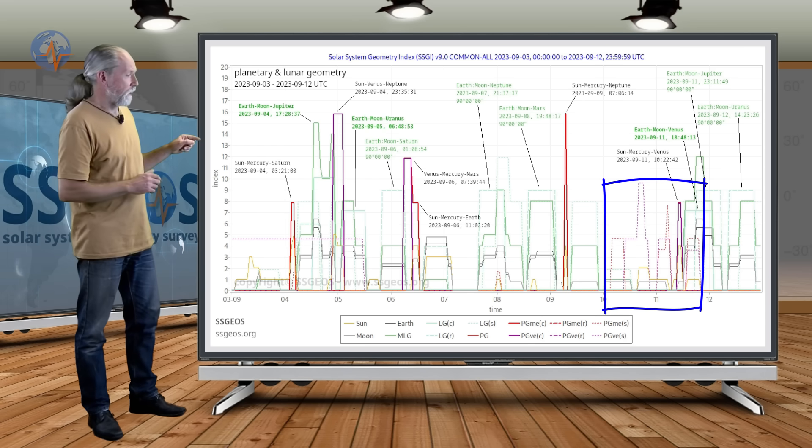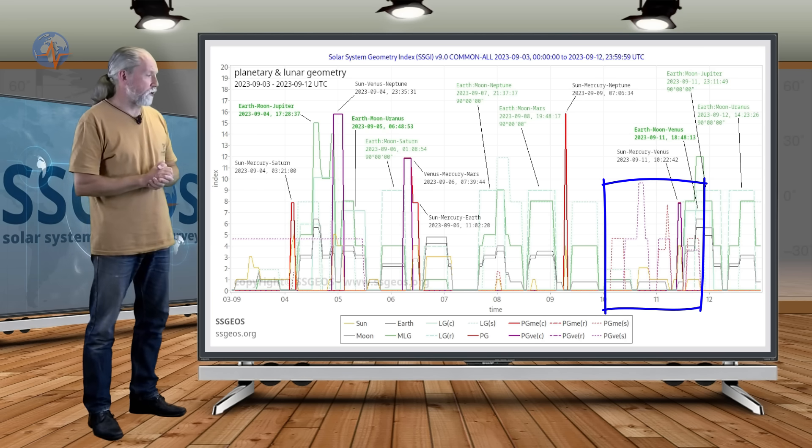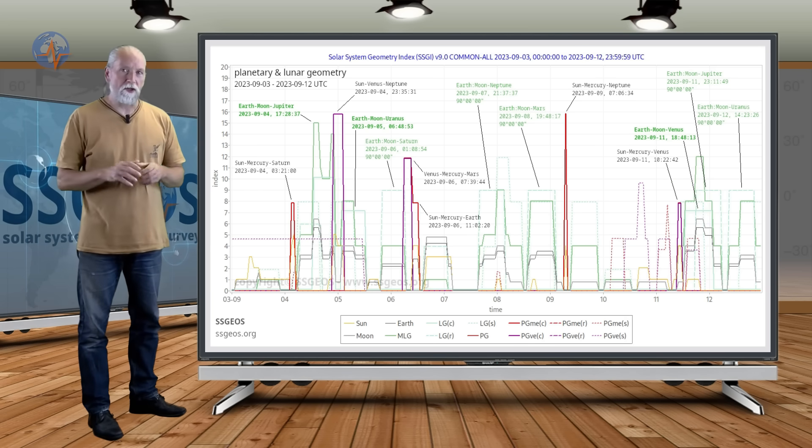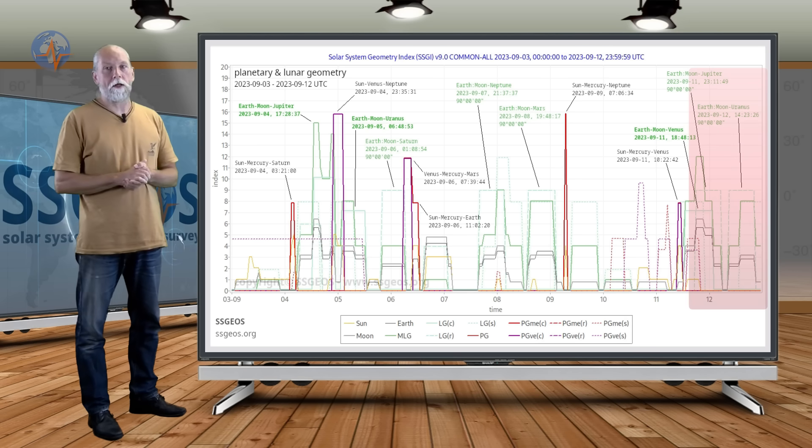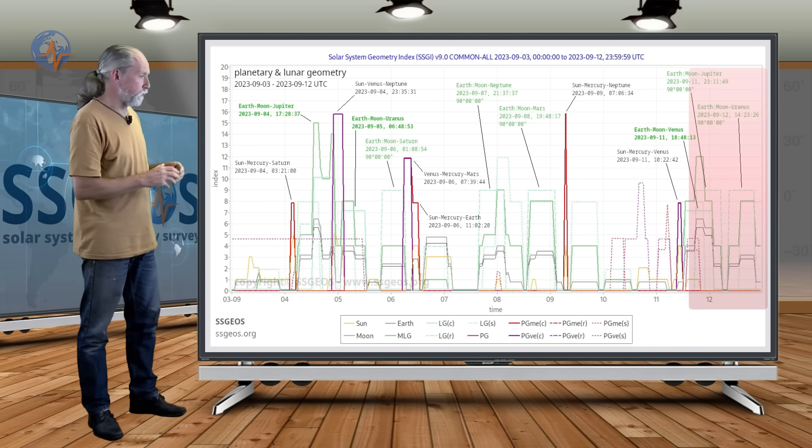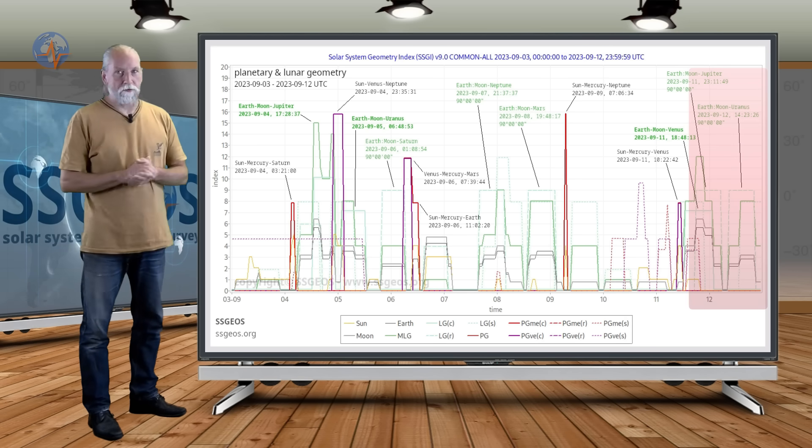It is converging with a planetary conjunction, Sun-Mercury-Venus, that is usually followed by a borderline low 6 magnitude earthquake, and that would probably be around the 12th.